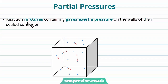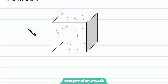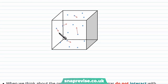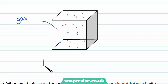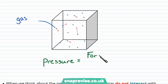It's common to study reactions of mixtures that contain gases, and the gases exert a pressure on the walls of their sealed container. We can imagine a square container like this box here, and each of the blue particles is a gas molecule. As they bounce off the sides of the container, the container is going to feel a force, and the pressure is just the force divided by the area that that force is being applied over.